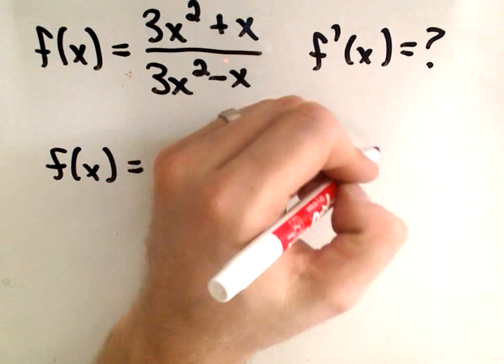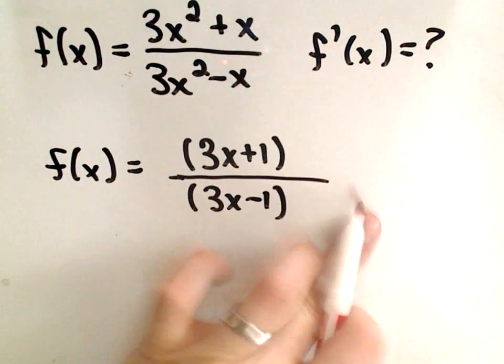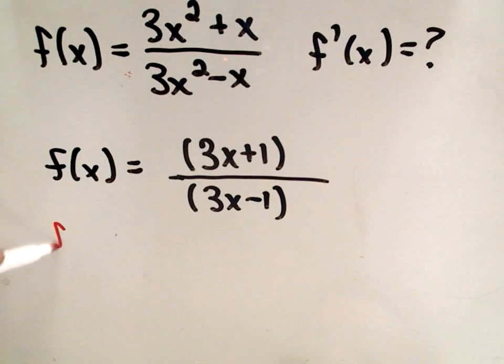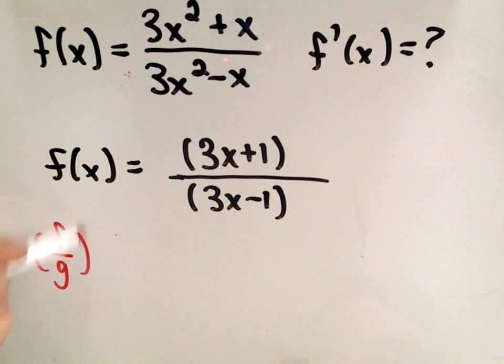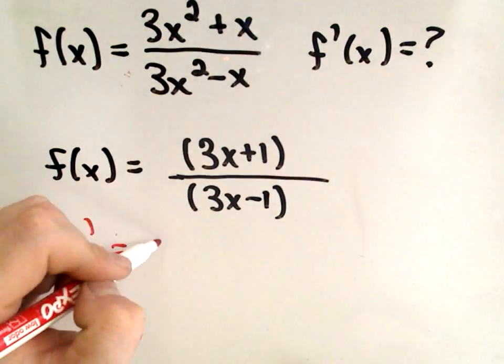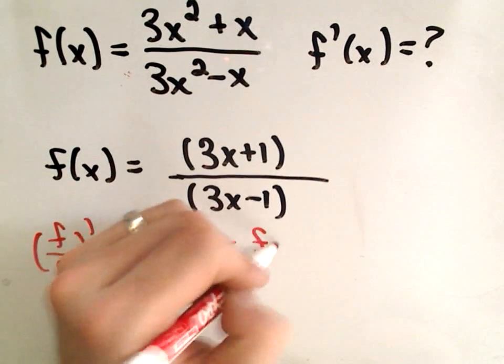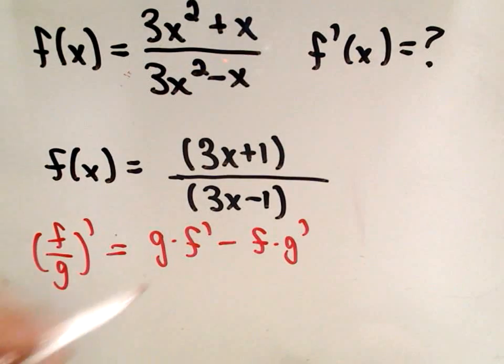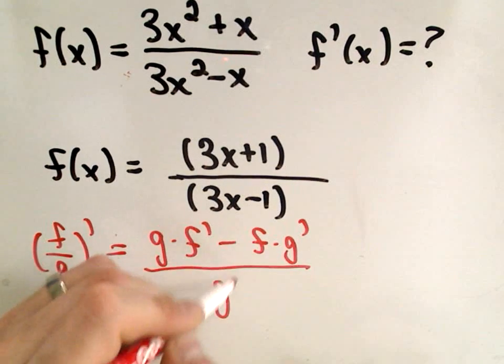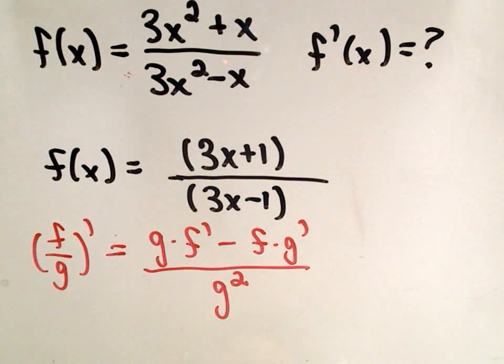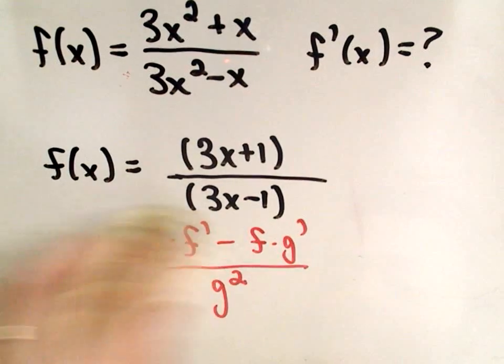So now we just have to remember the quotient rule. The derivative of a fraction says you get the bottom times the derivative of the top minus the top times the derivative of the bottom, all over the bottom part squared. Just to remind you of the quotient rule, so I'm going to erase it and give myself some space to do this problem.